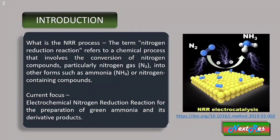The Haber-Bosch process involves the reaction of nitrogen gas and hydrogen gas in the presence of an iron-based catalyst and high temperature and pressure. This reaction converts the nitrogen and hydrogen into ammonia. The process is highly efficient and allows for the large-scale production of ammonia.